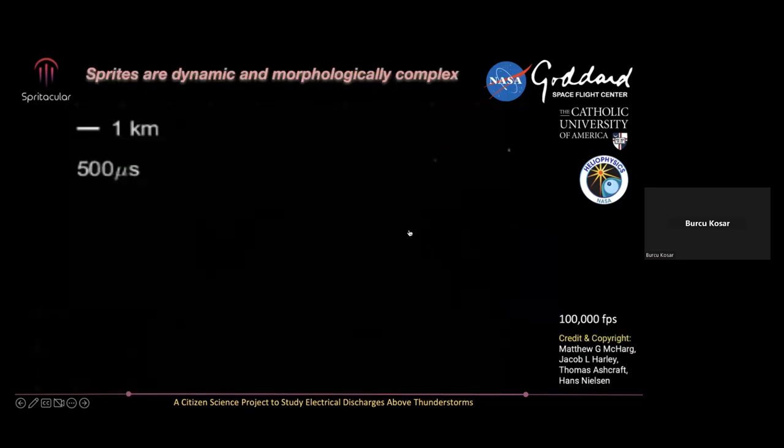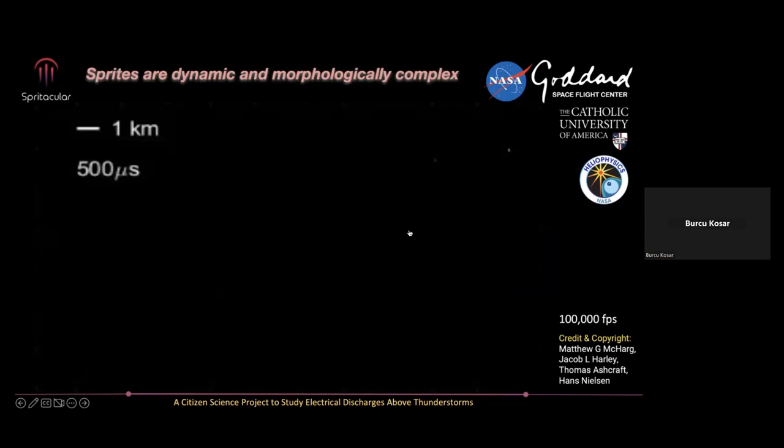Spectroscopic studies show these emissions are caused by excitation of molecular nitrogen: the red color is from the first positive band of nitrogen, and the blue color is a combination of the second positive nitrogen, first negative, and two-plus systems.